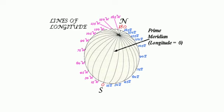All places along the same meridian of longitude experience their noon or mid-day at the same time. The meridian passing through Greenwich has been chosen as the prime meridian, marked as 0° longitude. There are 180° of longitude to the east of Greenwich and 180° to the west, making 360° of longitude in total. The zone between the prime meridian and 180° east longitude is called the eastern hemisphere, and the opposite zone is called the western hemisphere.